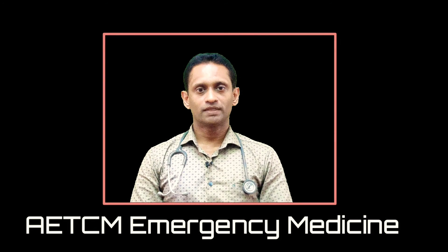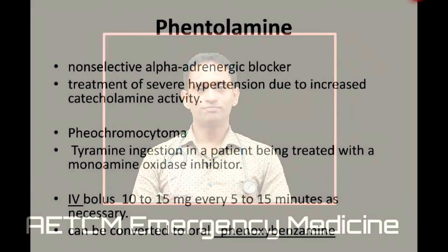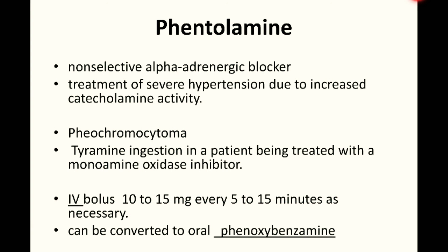Phentolamine is a non-selective alpha blocker primarily used for severe hypertension due to increased catecholamine activity — examples include pheochromocytoma and tyramine injection in a patient on an MAO inhibitor. It is given as an IV bolus of 10 to 15 mg every 5 to 15 minutes as necessary, and can be converted in later stages to oral phenoxybenzamine.